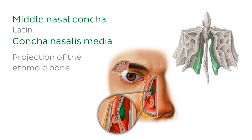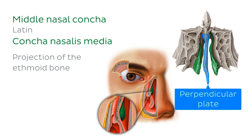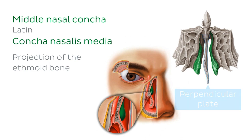This image on the right is of an isolated ethmoid bone — quite the funky bone. The middle nasal conchae are highlighted in green, one on either side. The bony projection in the middle is the perpendicular plate of the ethmoid bone, which makes up part of the nasal septum and is therefore in the midline of the skull.